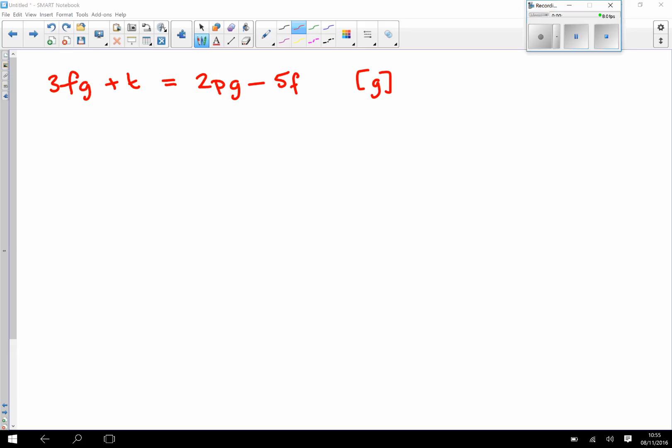So taking this question as an example, I want to make G the subject of the formula. The first thing I'm looking to do is to get anything with a G in it on the same side of the equation. So the first thing I'm going to do is subtract 2PG from both sides of the equation.